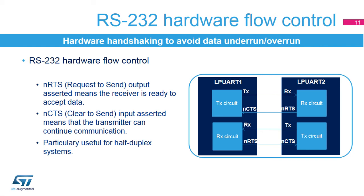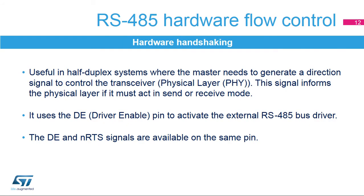For serial half-duplex communication protocols like RS-485, the master needs to generate a direction signal to control the transceiver or physical layer. This signal informs the physical layer if it must act in send or receive mode. In RS-485 mode, a control line driver enable is used to activate the external transceiver control.